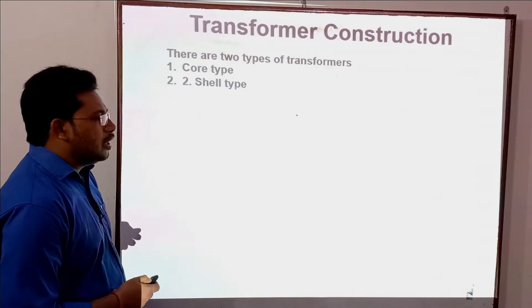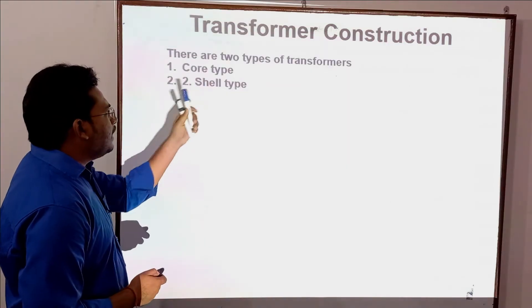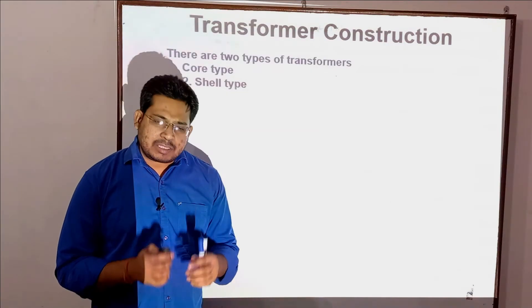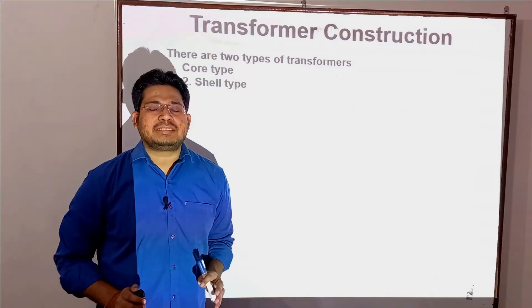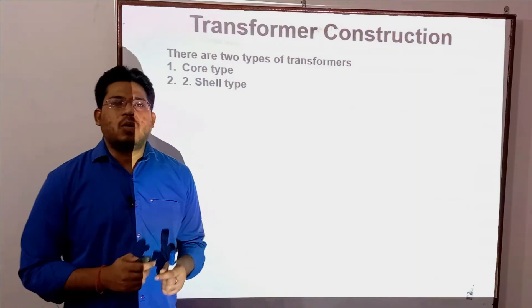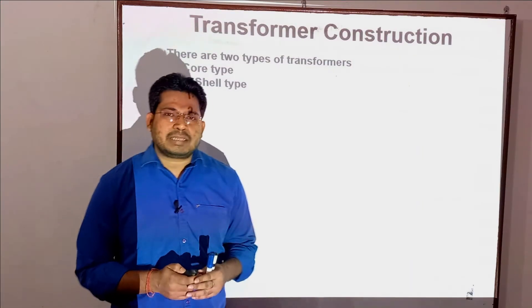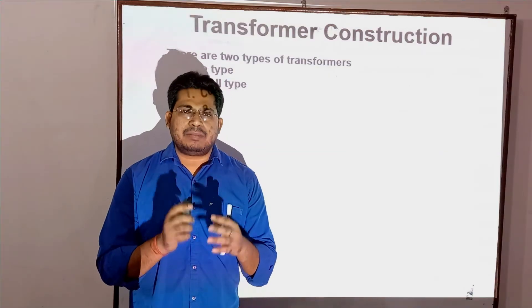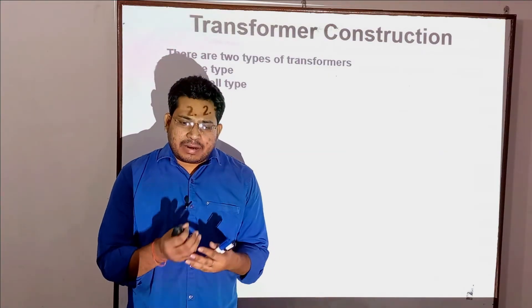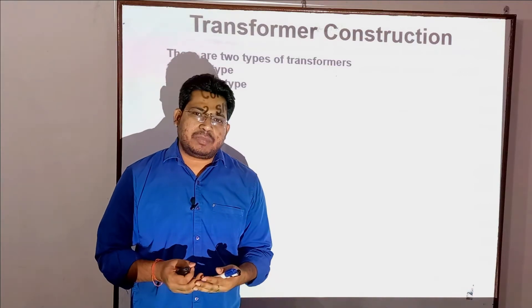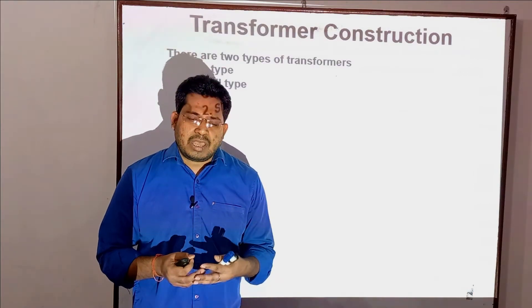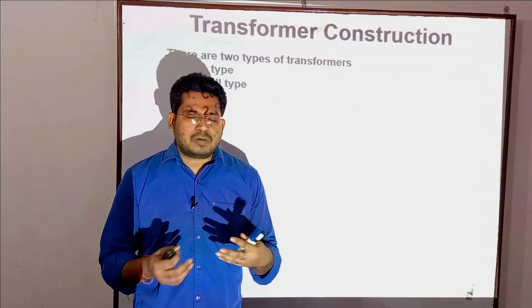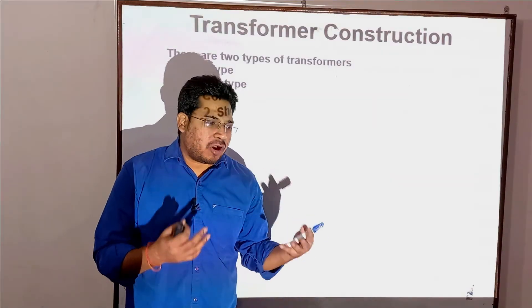There are two types of transformer based on construction: core type and shell type. When we talk about transformers, the core material is very important, because by choosing the right core material, we can minimize losses. We discuss soft iron core, but for modern transformers, special materials with high magnetic permeability and specific magnetic properties are used.